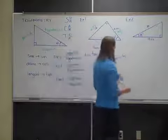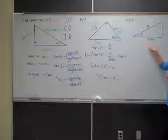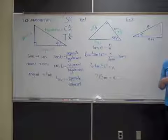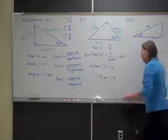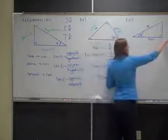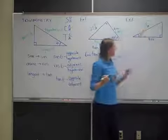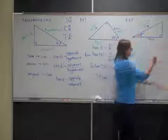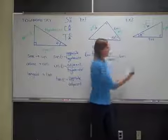Let's do one more example. I have another right triangle with 18 degrees labeled, 9 feet along the bottom, and the unknown side length Z at the top. Let's label just like we did last time. First, hypotenuse — always across from the right angle. Then coming straight out of the angle we're working with, the side you run into is the opposite. The last side not yet labeled is the adjacent.